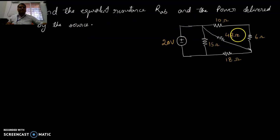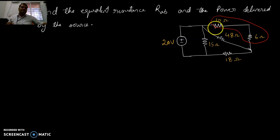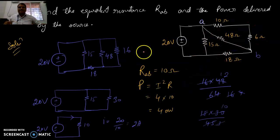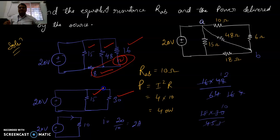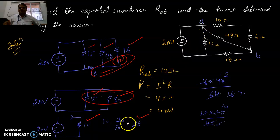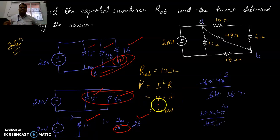Another problem: find the equivalent resistance R_AB. These 2 are in series and the entire thing is in parallel with 48, then in series with 18, then in parallel with 15. Here 10 and 6 give 16, and 16 in parallel with 48 gives 12. Then 12 and 18 in series give 30, and 30 in parallel with 15 gives 10 ohms. The current is 2 amperes and power is I squared times R: 4 times 10 equals 40 watts.